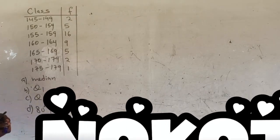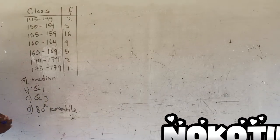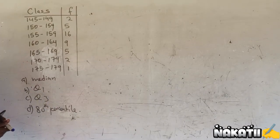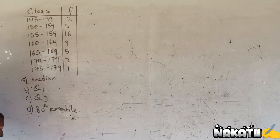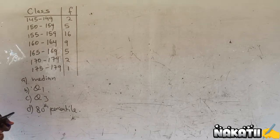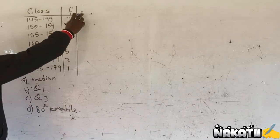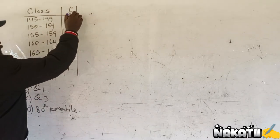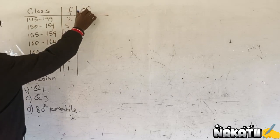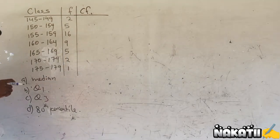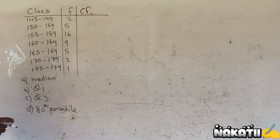We are being told to find the median, Q1, which is the lower quartile, Q3, which is the upper quartile, and the 80th percentile. We just need to extend this table and add another column of cumulative frequency.